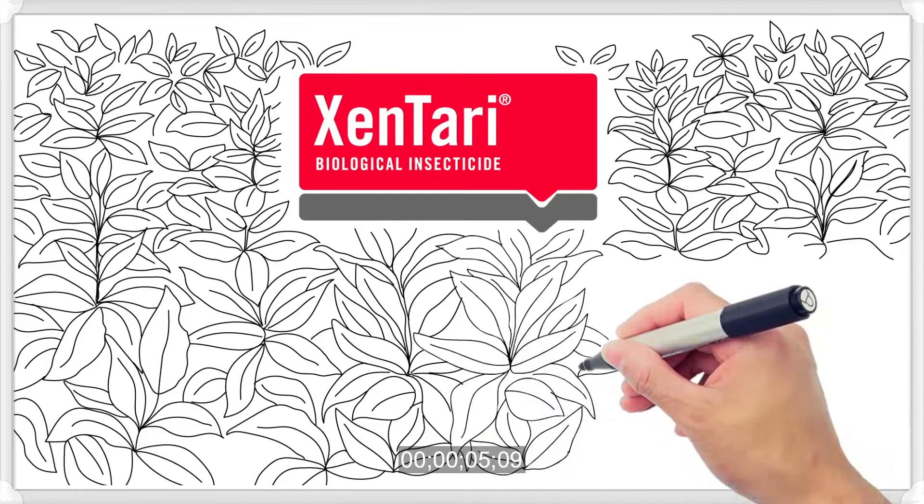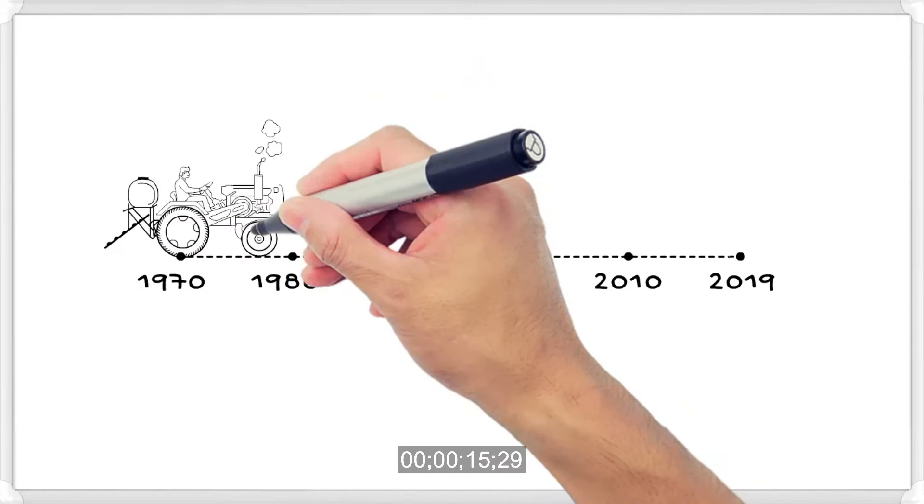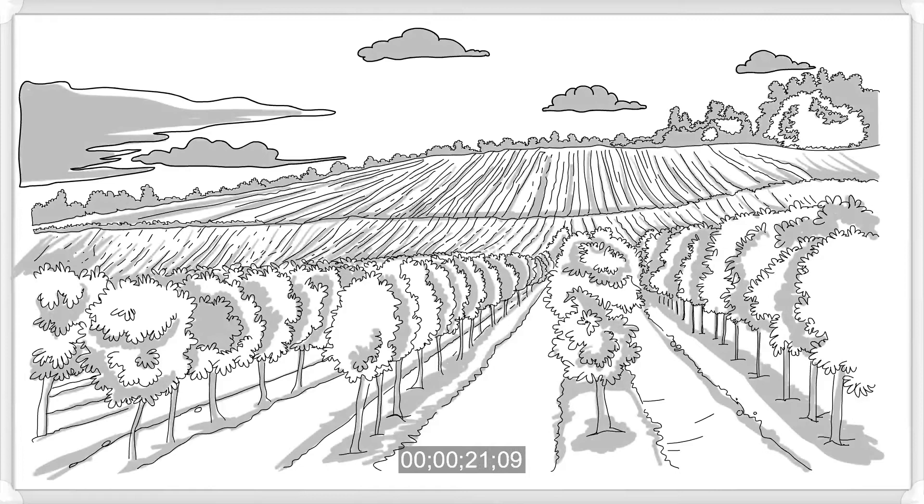Zantari is a biological insecticide made from the Bt subspecies Izaui strain ABTS-1857, a naturally occurring bacterium. Bt is considered the most successful bio-insecticide of the last century.